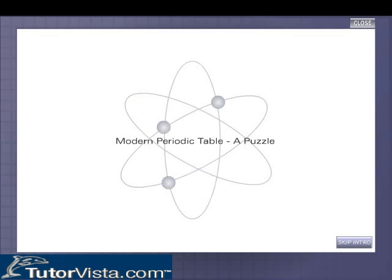The modern periodic table arranges elements in increasing order of their atomic numbers. The modern periodic table comprises seven horizontal rows called periods and 18 vertical columns called groups.